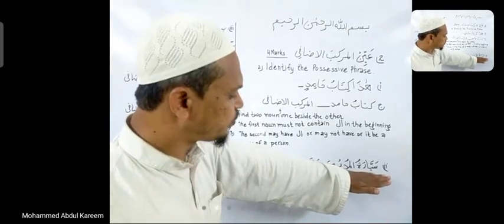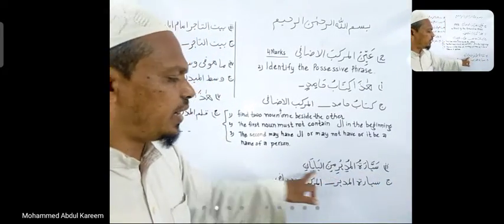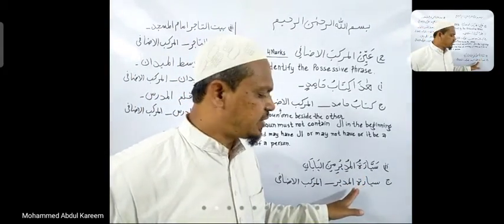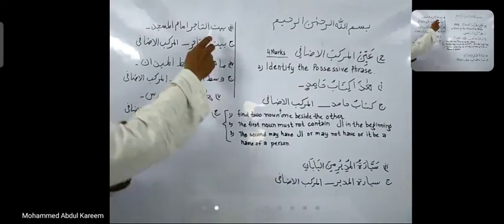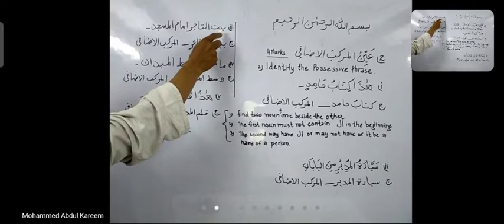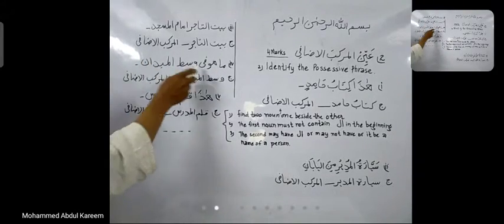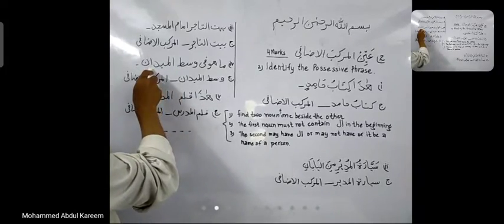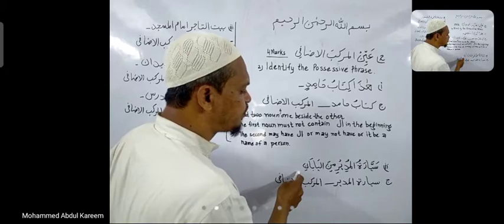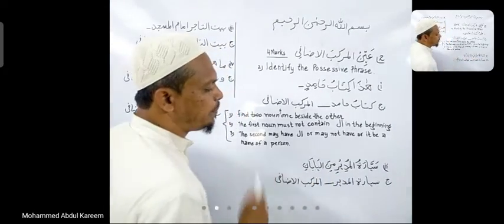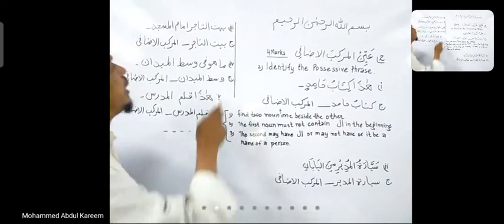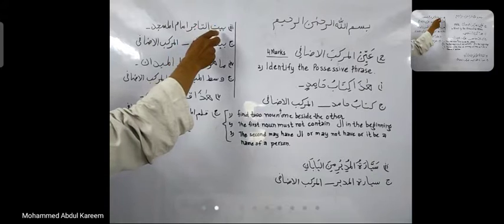Second sentence: 'Sayyaratul mudir min al-Yaban' — the principal's car is from Japan. The possessive phrase here is Sayyaratul mudir. Third sentence: 'Baituttajiri amamal masjid' — the house of the trader is in front of the masjid. The possessive phrase is Baituttajiri.